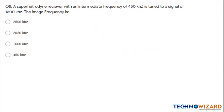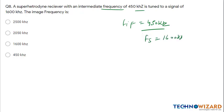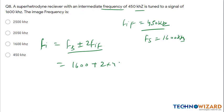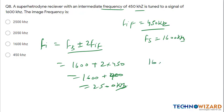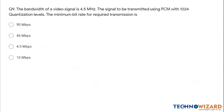Question 8: A superheterodyne receiver with intermediate frequency FIF = 450 kHz receives a signal at FS = 1600 kHz. We have to find the image frequency. Image frequency = FS ± 2·FIF. Taking the plus sign: 1600 + 2×450 = 1600 + 900 = 2500 kHz. With the minus sign: 1600 − 900 = 700 kHz, which is not among the options. Therefore 2500 kHz is the correct answer — option A.